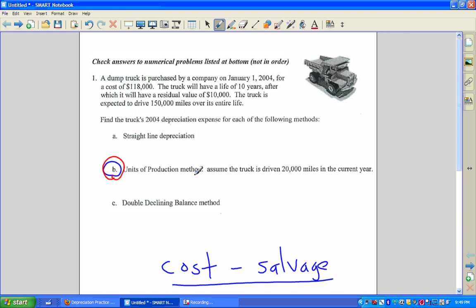For units of production method, you still need the cost of the asset and the residual value of the asset. But instead of the life, you don't need the life anymore. You need the total number of units that you're saying the asset is going to perform or use in its life.